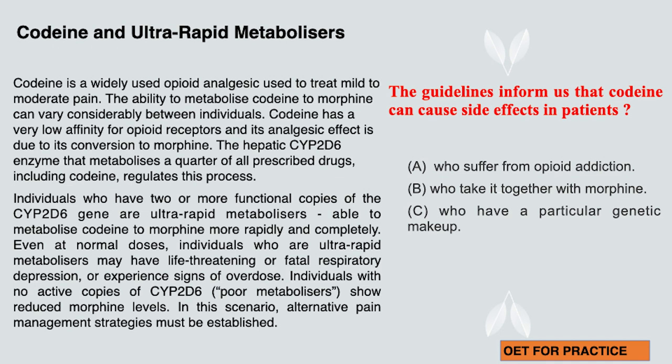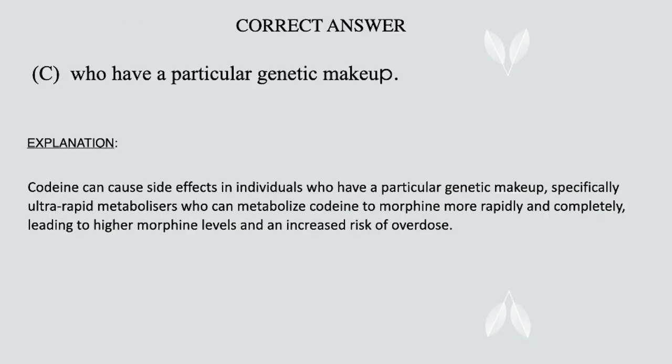The correct option is C. Let's look at why it is correct and why other options are wrong. In option C, codeine can cause side effects in individuals who have a particular genetic makeup.